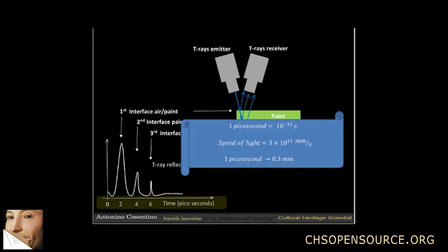We can therefore switch the x-axis from time to space and we have a spectrum which will clearly show the actual depth of each interface.